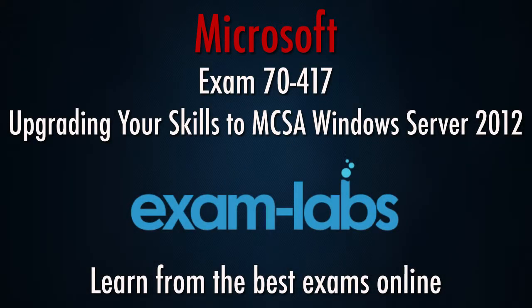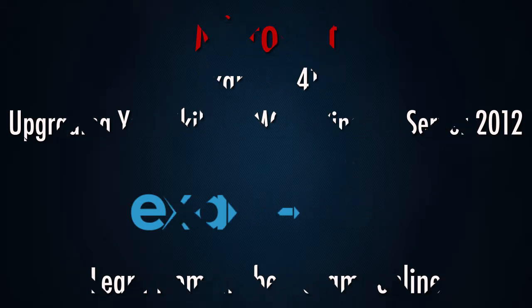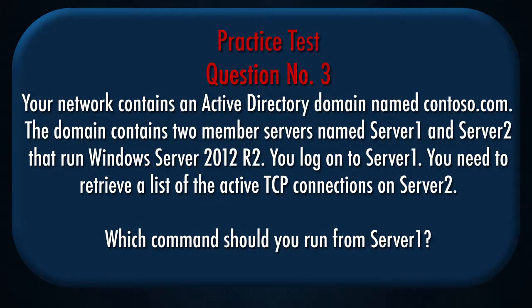Upgrading your skills to MCSA Windows Server 2012 exam. Question number 3: Your network contains an Active Directory domain named Contoso.com. The domain contains two member servers named Server1 and Server2 that run Windows Server 2012 R2. You log on to Server1. You need to retrieve a list of the active TCP connections on Server2. Which command should you run from Server1?